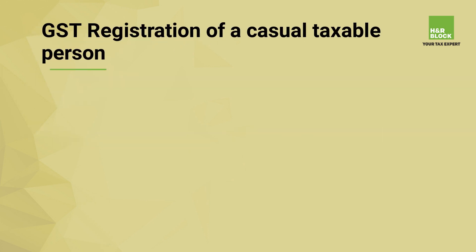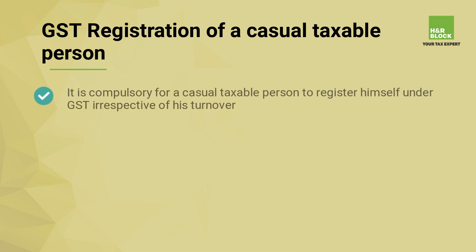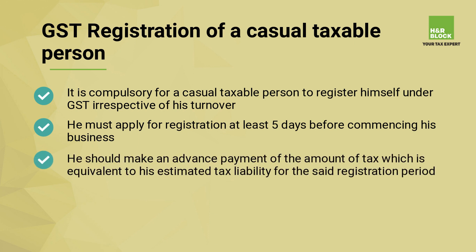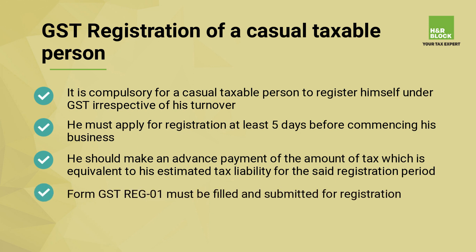Regarding GST registration of a casual taxable person: it is compulsory for a casual taxable person to register under GST irrespective of his turnover. He must apply for registration at least five days before commencing his business. He is not eligible for the composition scheme. He should make an advance payment of tax equivalent to his estimated tax liability for the registration period. Form GST REG-01 must be filled and submitted for registration.